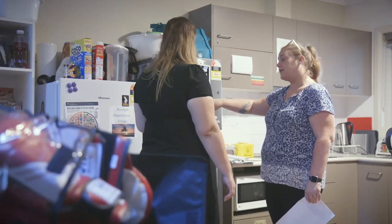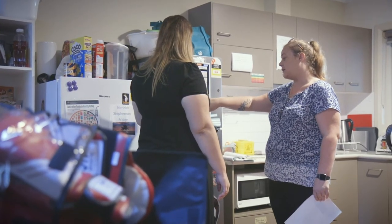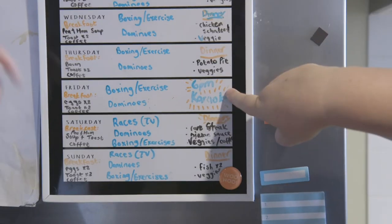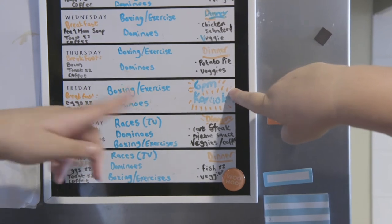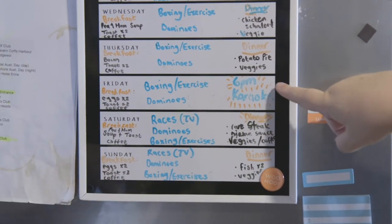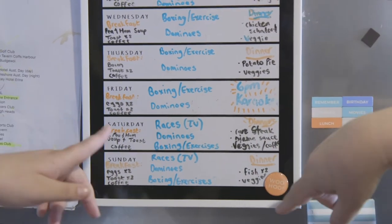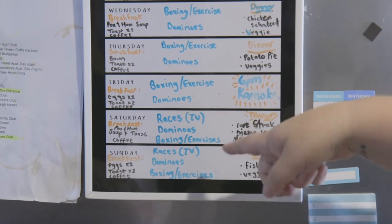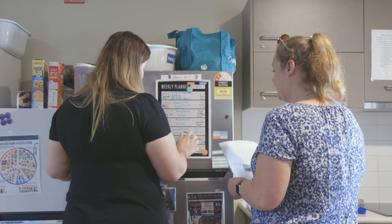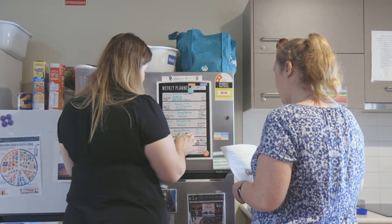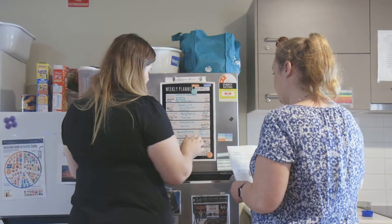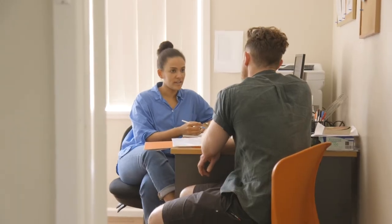In accommodation services, shift plans should cover what each individual does in the mornings, afternoons and evenings for each day of the week. They let staff know what is expected to happen on each shift so they can plan and prioritise what they need to do.